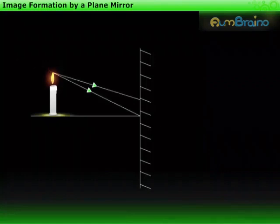Rays are incident on the mirror, say OA and OC. Draw normals to the surface of the mirror at the points A and C.